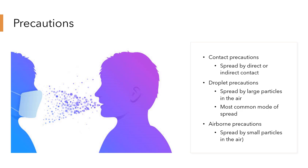You have contact precautions, which can spread directly or indirectly. You have droplet precautions involving large particles in the air — concerns include viral infections, influenza, measles, chickenpox, pneumonia, and tuberculosis, all transferable by droplet. Then you have airborne precautions, which involve a whole host of other organisms. You have to be really careful in the lab — be prepared, be diligent, and follow the recommendations that will be discussed shortly.